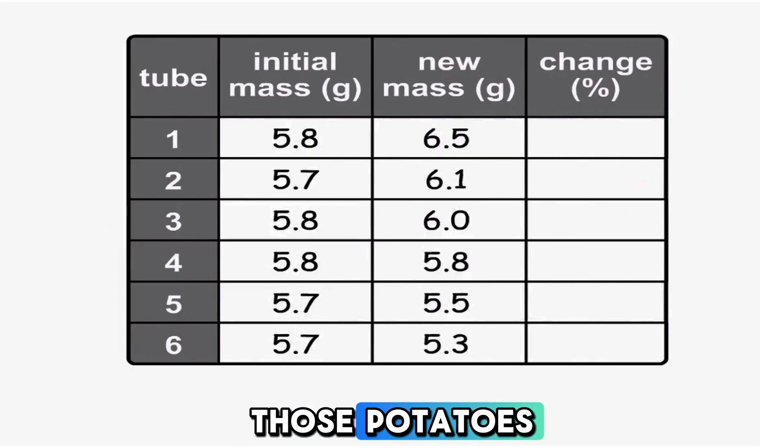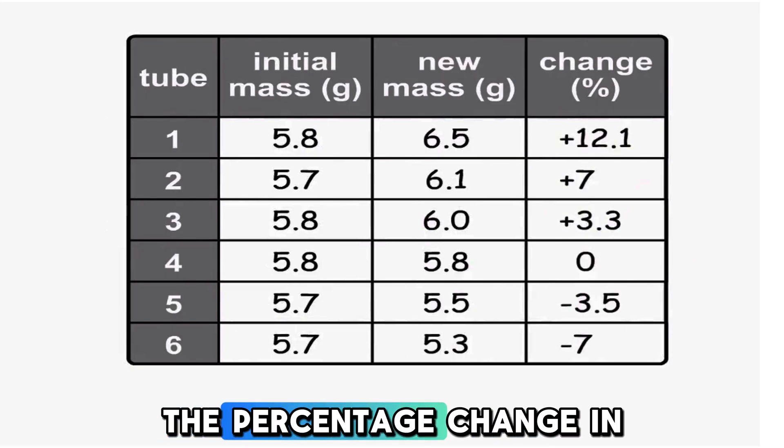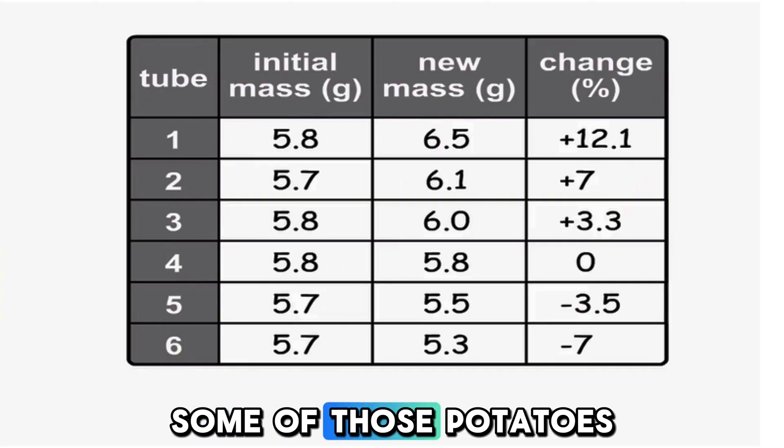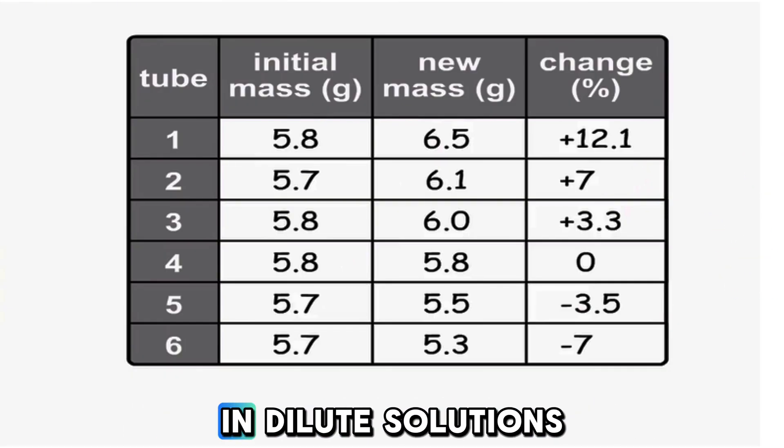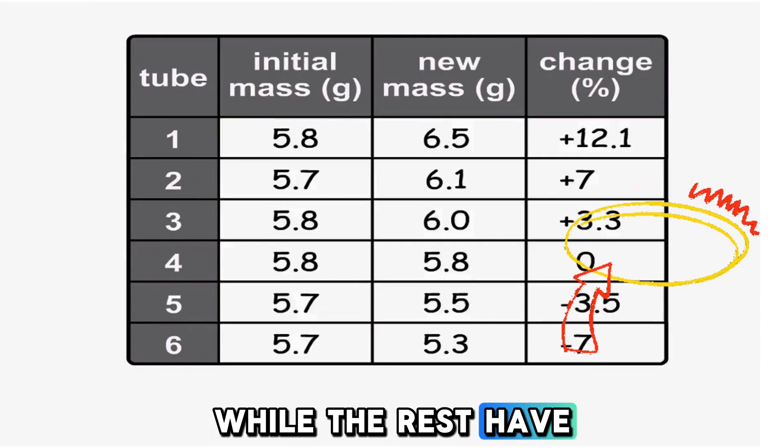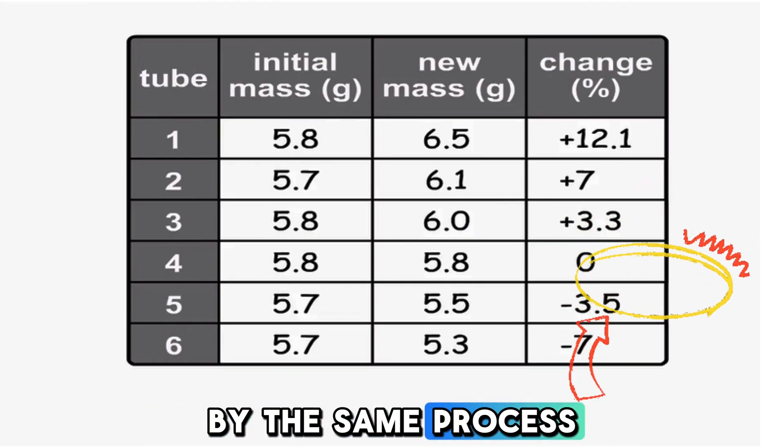We will re-weigh those potatoes and we will find the percentage change in their mass. You can see that some of those potatoes have gained water by osmosis because they've been put in dilute solutions while the rest have lost mass because water diffused out by the same process.